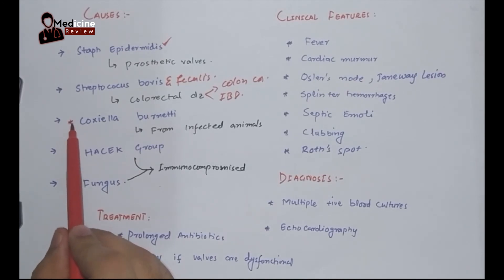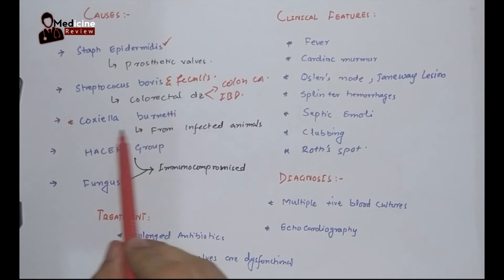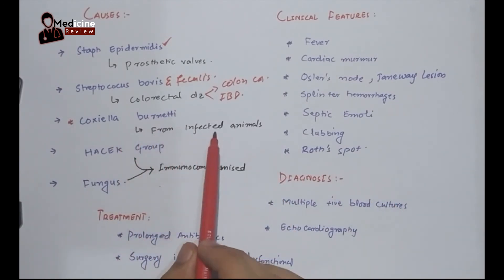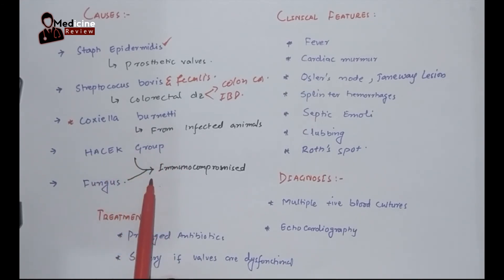This is an important MCQ point: if a patient has no specific history except contact with cattle, goats, sheep, or cows, and is diagnosed with infective endocarditis, think of Coxiella burnetii. Coxiella burnetii first infects animals, and from animals these bacteria can enter the human bloodstream and cause infective endocarditis.